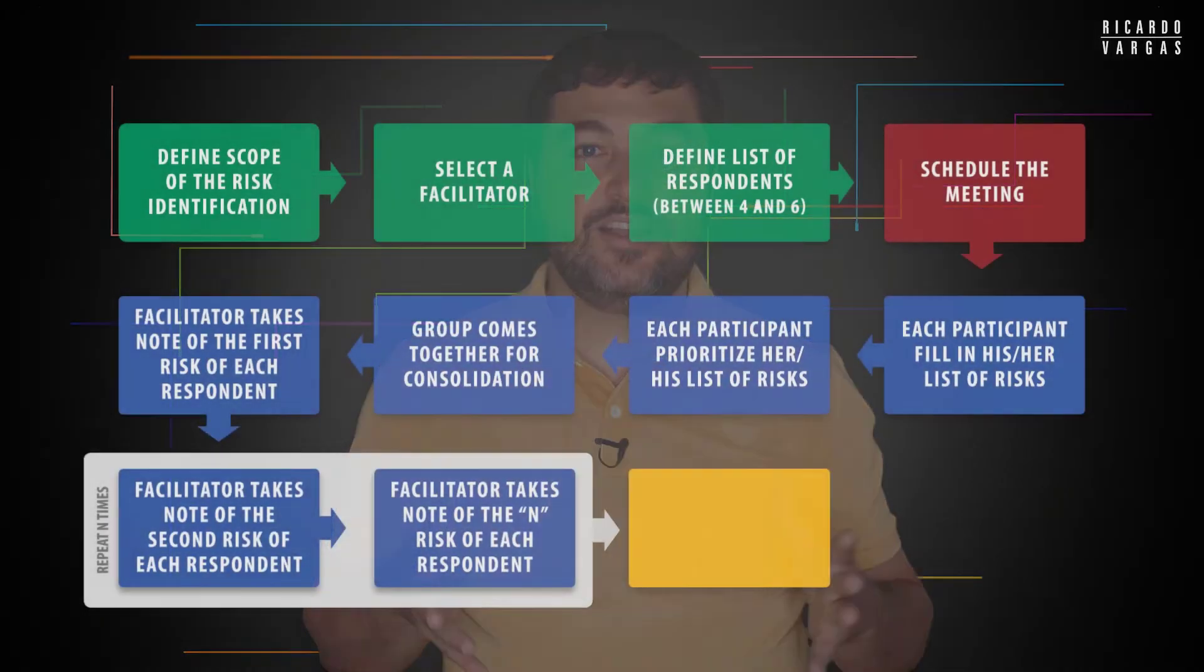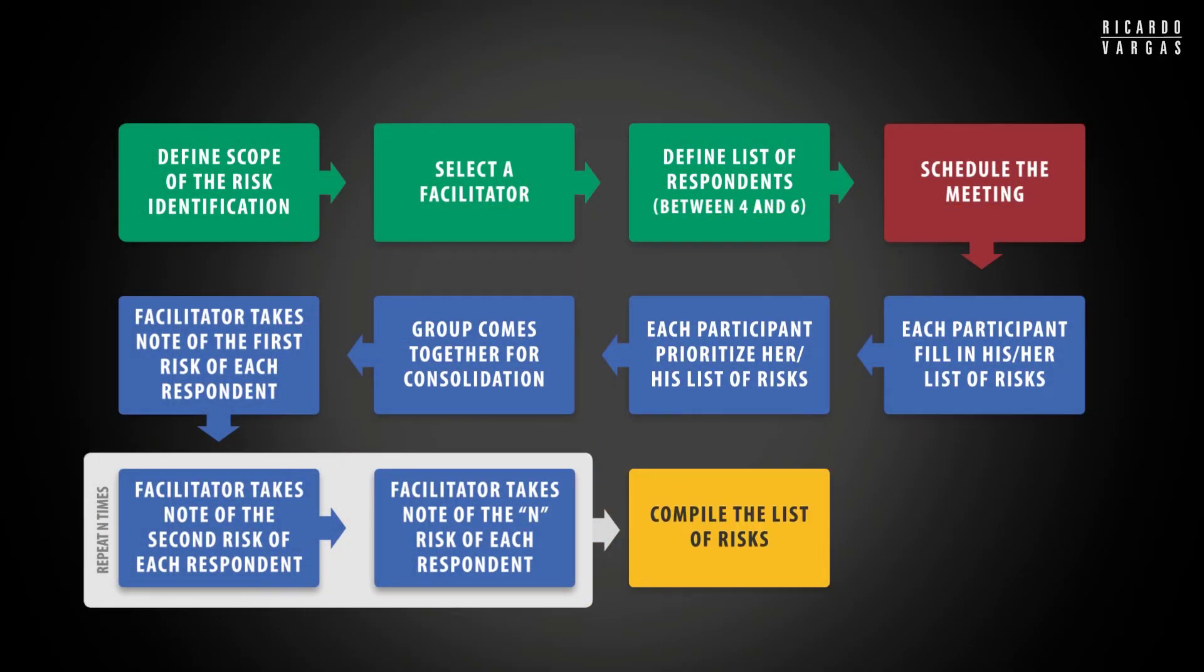And then at the end, the facilitator will compile a list. Do you agree with me that the compiled list is much better than the individual list of each one? Because it's a combined and collective experience. So this is the way we do NGT. It's great, and I use it a lot. It's very simple, not so chaotic. It's a very nice and clear way of doing this.